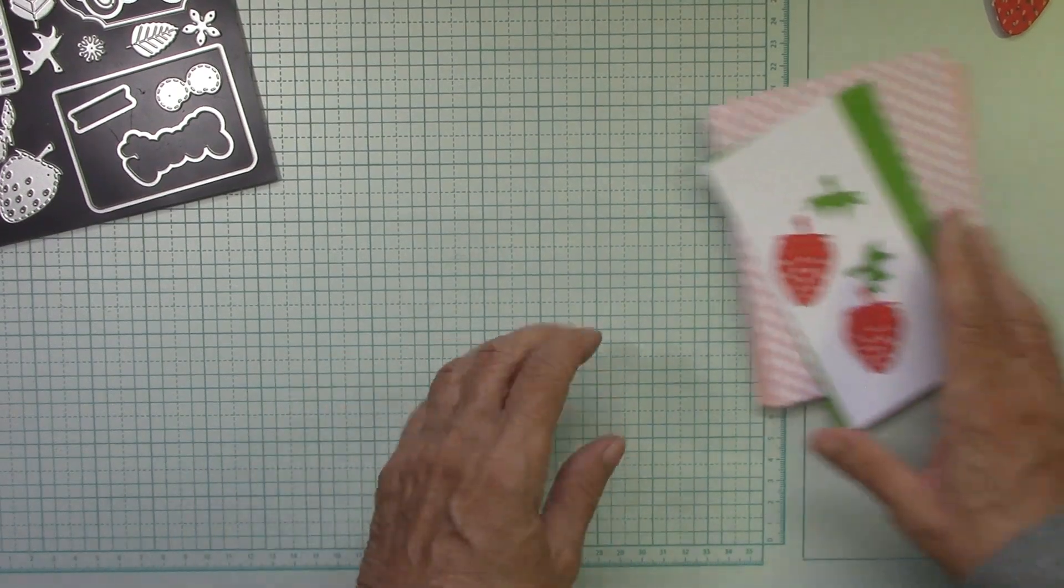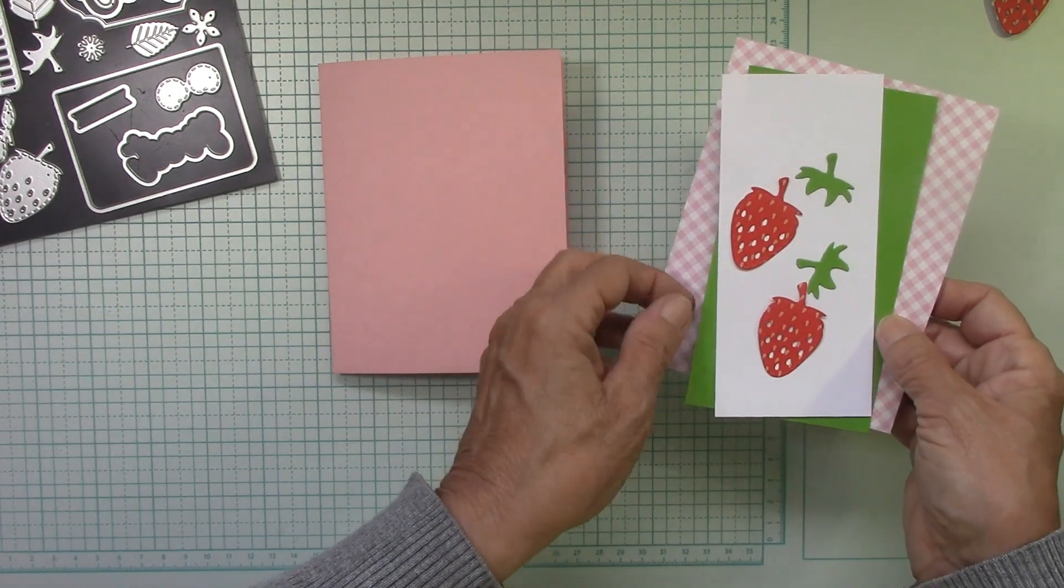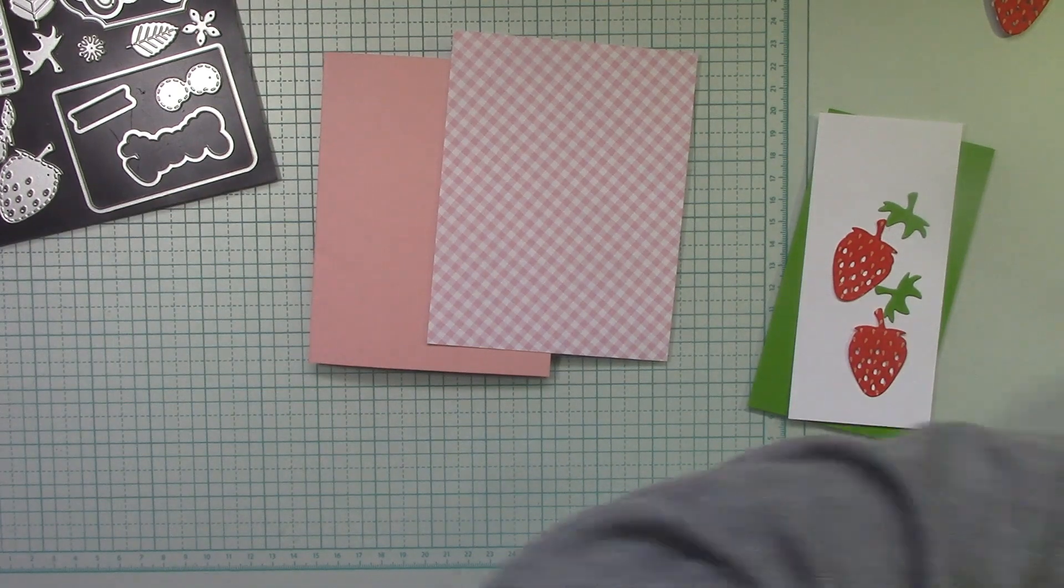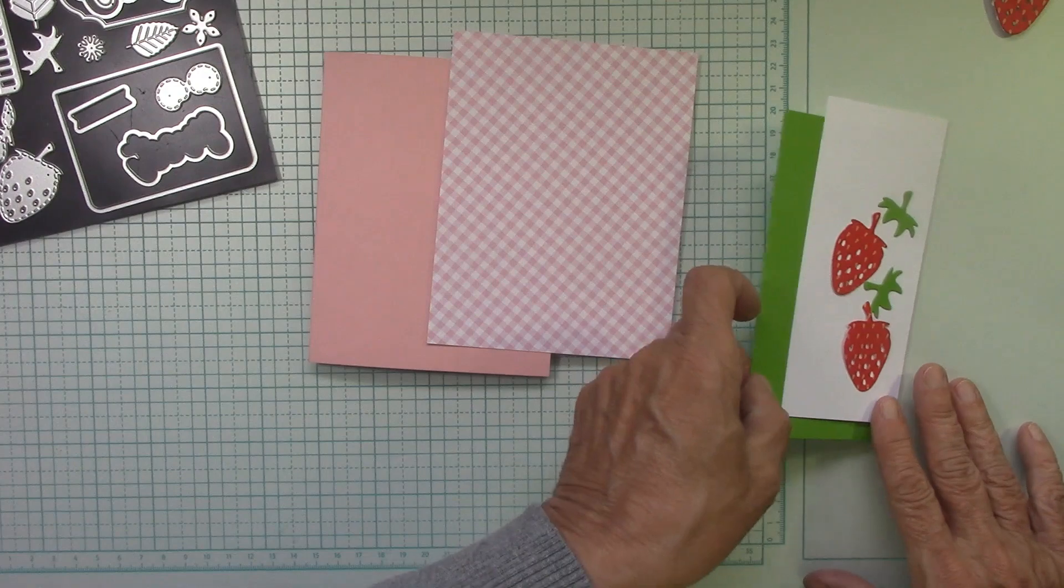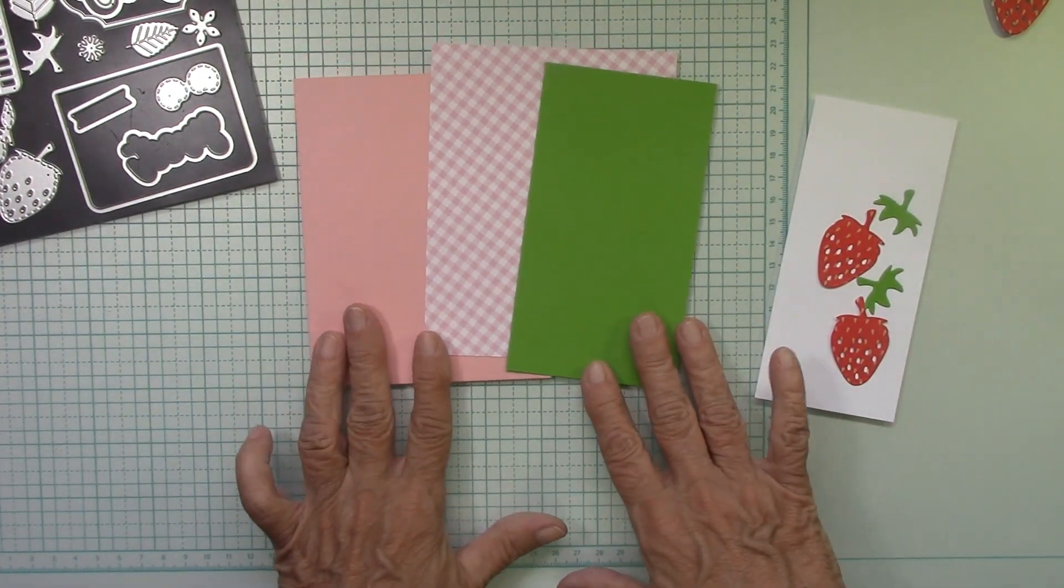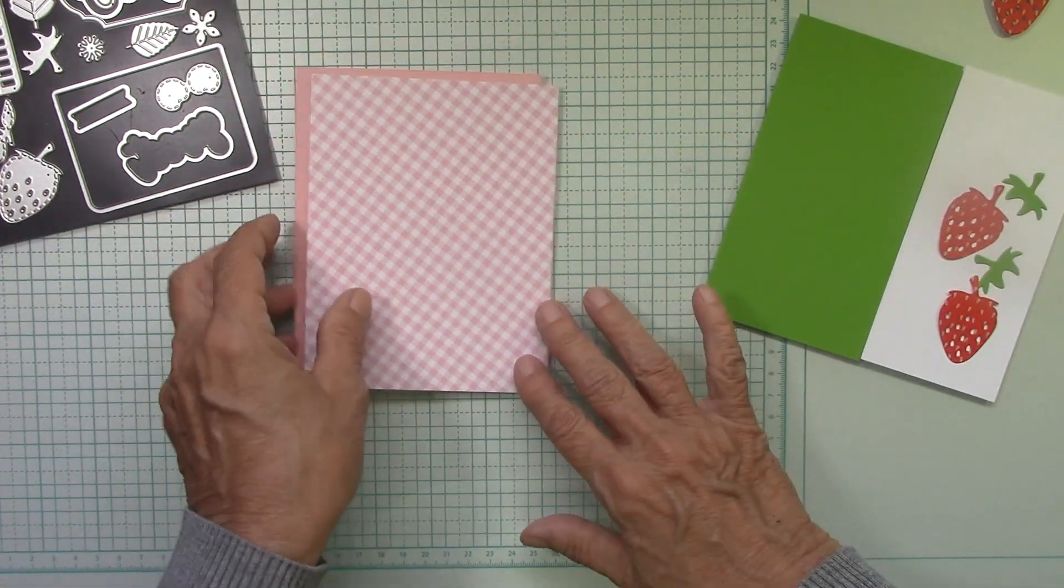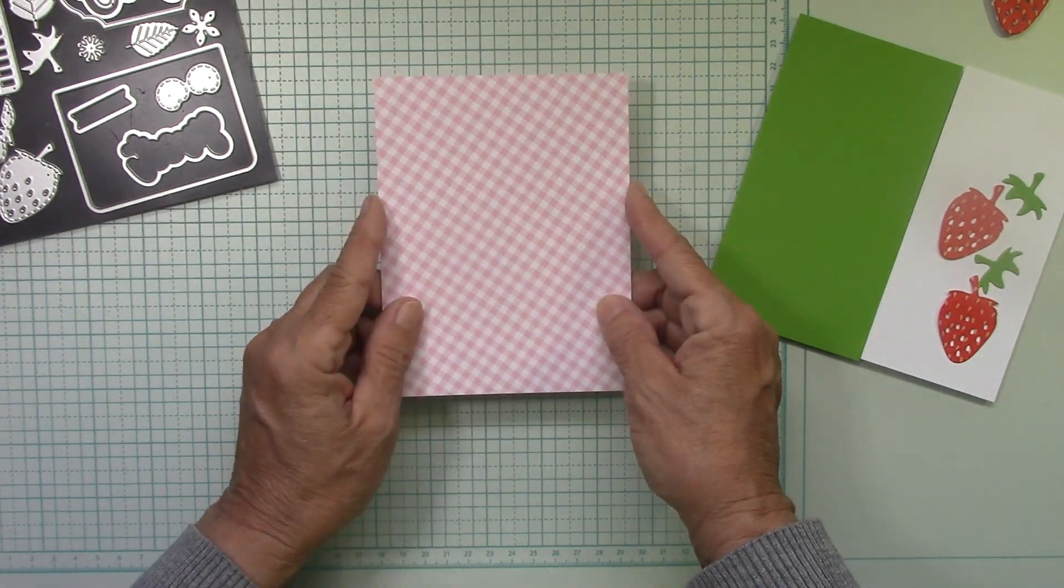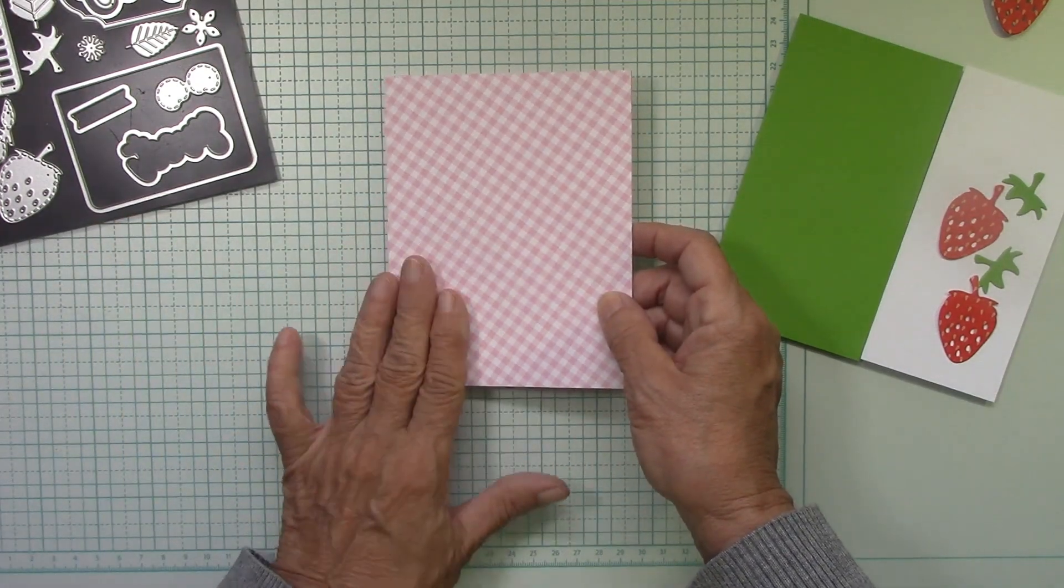I'm using some Gina K paper here. This is Gina K Innocent Pink and then this comes from the Berry Sweet notepad right here. And then I'm using the Gina K Lucky Clover. Isn't that pretty? I love pink and green. The greatest thing about these pads that Scrapbook.com has is that it is the front of the card. You don't have to cut, measure, anything. It's five and a half by four and a quarter. It's perfect.